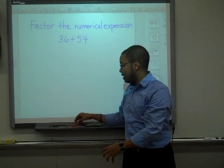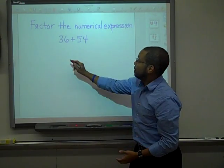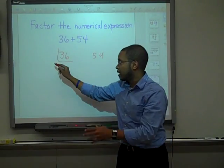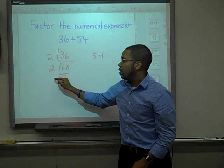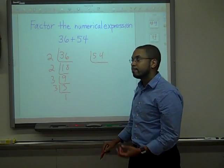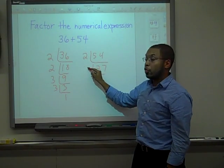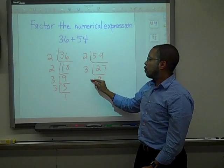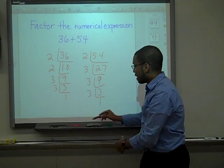Before I do this, I have to find the greatest common factor of both 36 and 54. So I'm going to prime factor out 36: I get 2, 18, 2, 9, 3, 3, 3, 1. Prime factor out 54: 2, 27, 3, 9, 3, 3, 3, 1. So that's the prime factorization of those two numbers.